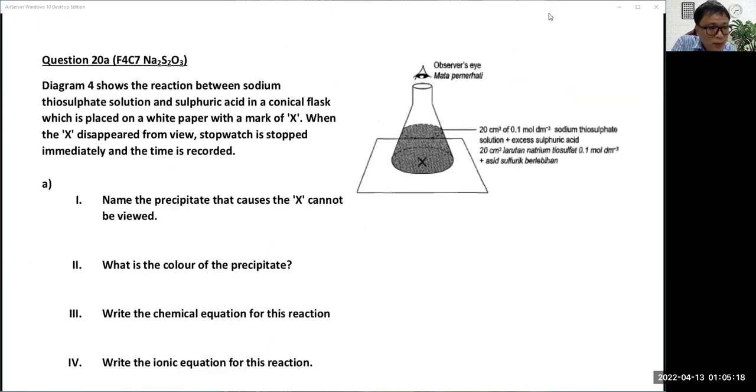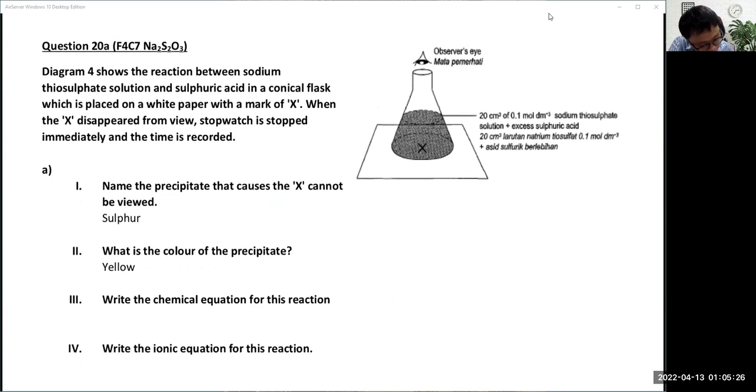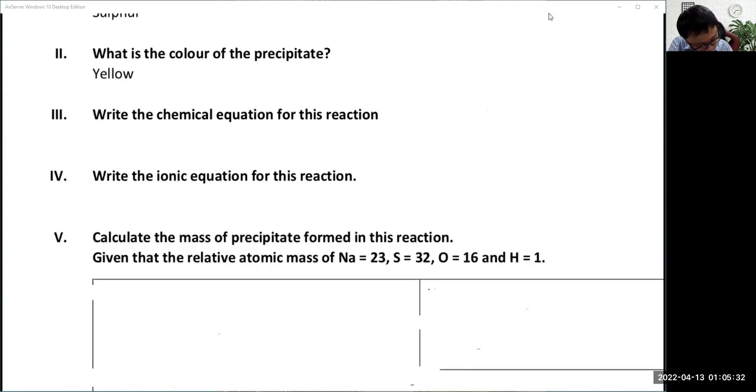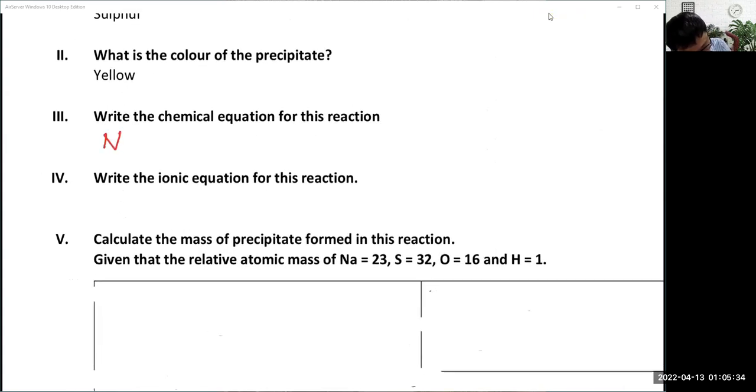So we try this question. The precipitate that causes the X to disappear, which is your sulfur, is yellow color. The chemical equation you have to remember: sodium thiosulfate plus H2SO4 gives sodium sulfate plus H2O plus S plus SO2.